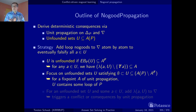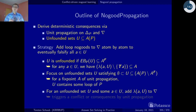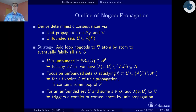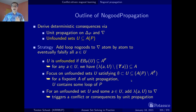Whenever we have an unfounded set consisting of true and undefined atoms, we know it contains a loop of the program. The strategy is: whenever we have an unfounded set, pick an atom out of it and add the corresponding loop no-good to the dynamic no-goods. That loop no-good is immediately ready for unit propagation — FA will be a unit-resulting literal — triggering either a conflict or further consequences.